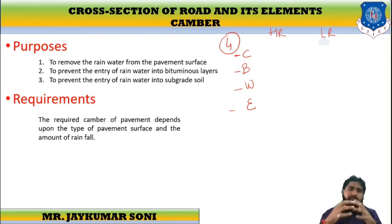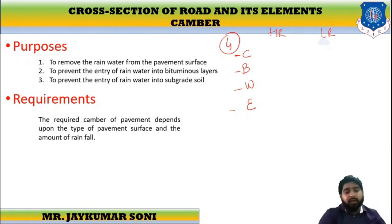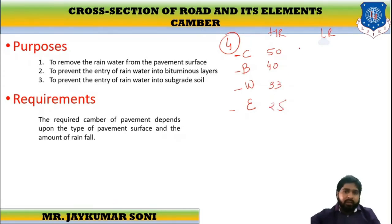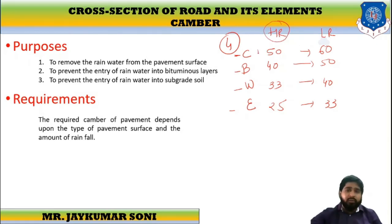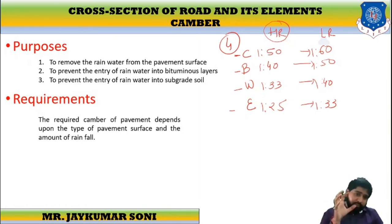C stands for concrete, B stands for bituminous, W stands for water-bound macadam surface and earthen road. For heavy rainfall regions: concrete surface is 1 in 50, bituminous is 1 in 40, water-bound macadam is 1 in 33, and earthen road is 1 in 25. The same applies for the lower rainfall region. These are the types of camber based on the pavement surface and the amount of rainfall — heavy rainfall or low rainfall.